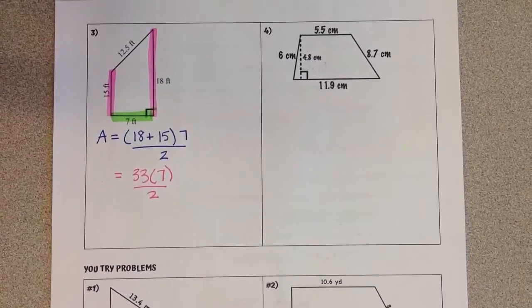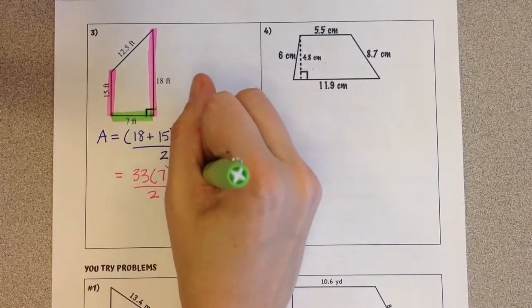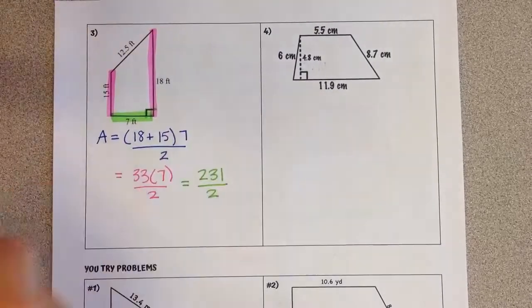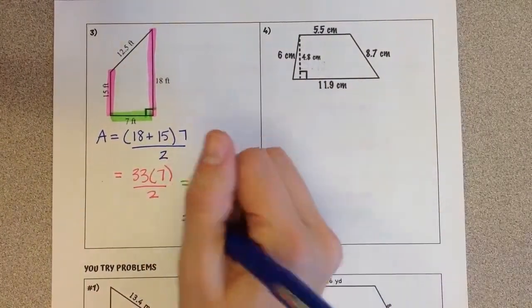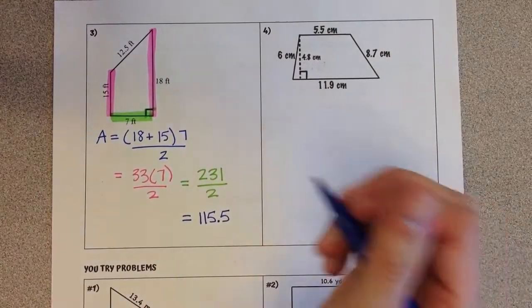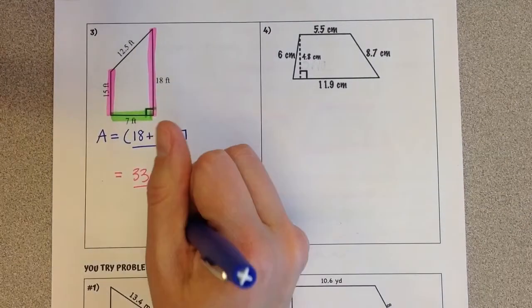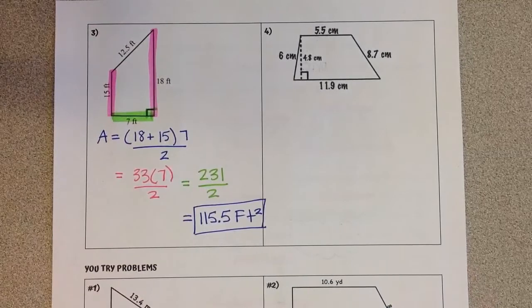We're going to multiply before we divide, 33 times 7 is 231, divided by 2, which when we calculate that gives us 115.5. Our units are feet. Area is always squared, so 115.5 feet squared.